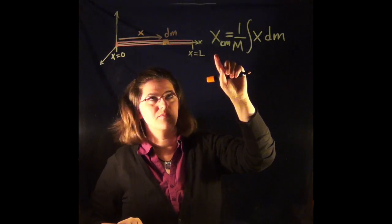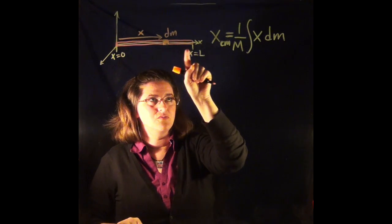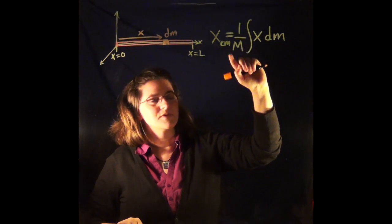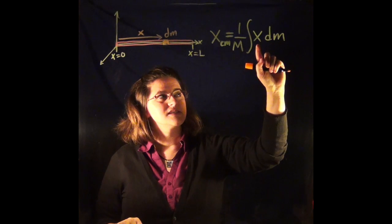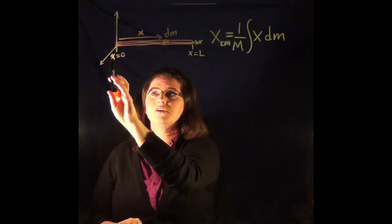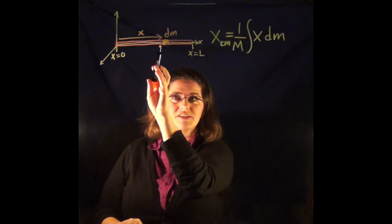Here's the equation for center of mass in the x direction, which I've defined in this direction. This m is the total mass. This is this distance x that goes out from the origin to the place where you have a tiny bit of mass dm.